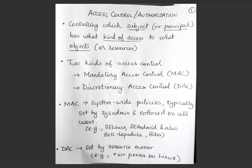When we talk about access control, there are two kinds: mandatory access control (MAC) and discretionary access control (DAC). Note that MAC here stands for mandatory access control — not message authentication codes as used in previous lectures, so you'll need to disambiguate based on context.